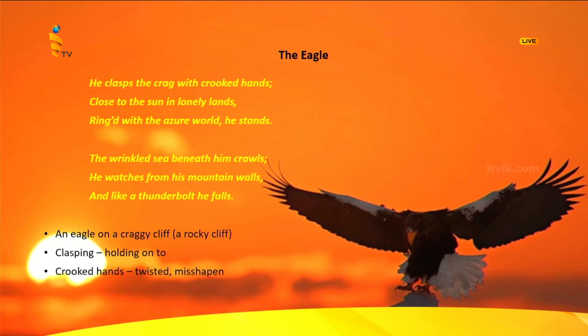Now let's see whether this particular eagle in this poem has the same qualities that we mentioned earlier. He clasps the crag with crooked hands, close to the sun in lonely lands. Ringed with the azure world he stands. The wrinkled sea beneath him crawls. He watches from his mountain walls, and like a thunderbolt he falls. Quite a short and simple poem, isn't it?